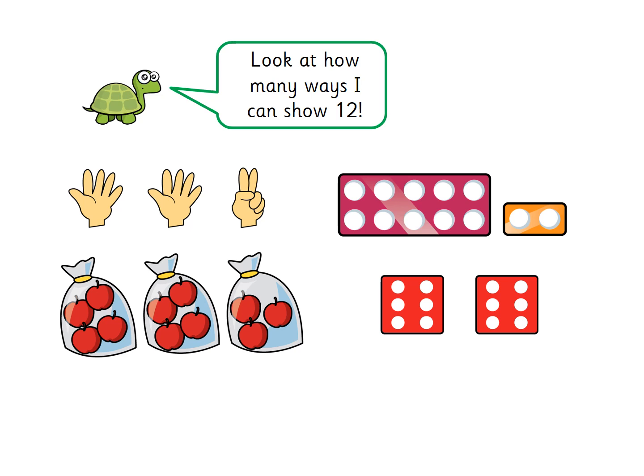This turtle says: look at how many ways I can show 12 — he's used his hands, numicon, dice, and apples, but I think he's made a mistake. The hands: two hands is 10, then count on two more — 10, 11, 12. Correct! The numicon: the purple block is 10, and the little orange block of 2 — 10, 11, 12. Correct! The dice: 6 and 6 — counting on from 6: 7, 8, 9, 10, 11, 12. We know 6 and 6 makes 12 — correct!